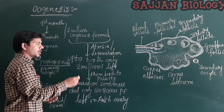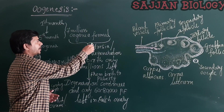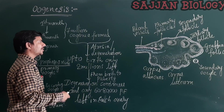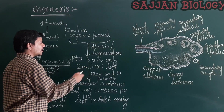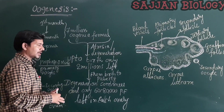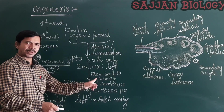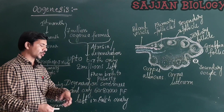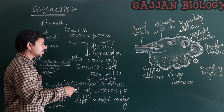Until birth, a number of oogonia degenerate. The total number of oogonia left until birth is two million in each ovary. From birth to puberty — puberty being the attainment of sexual maturity — two million oogonia remain.